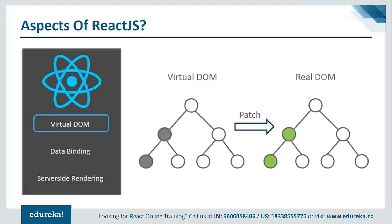Like an actual DOM, the virtual DOM is also a node tree that lists elements and their attributes and contents as objects and their properties. React's render function creates a node tree out of the React component and then updates this tree in response to mutations in the data model caused by user or system actions. This virtual DOM works in three simple steps: first, whenever underlying data changes, the entire UI is re-rendered in the virtual DOM representation. Then the difference between the previous DOM and the new one is calculated. Only after that, the real DOM is updated with only what has actually changed — like a patch applied only to the affected area.